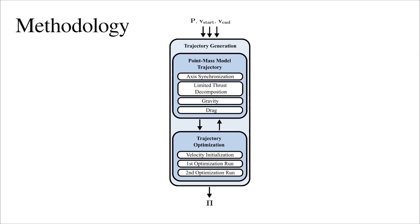The proposed trajectory generation process is composed of two main parts. The first one is the point mass model trajectory computation, which is composed of the following steps.